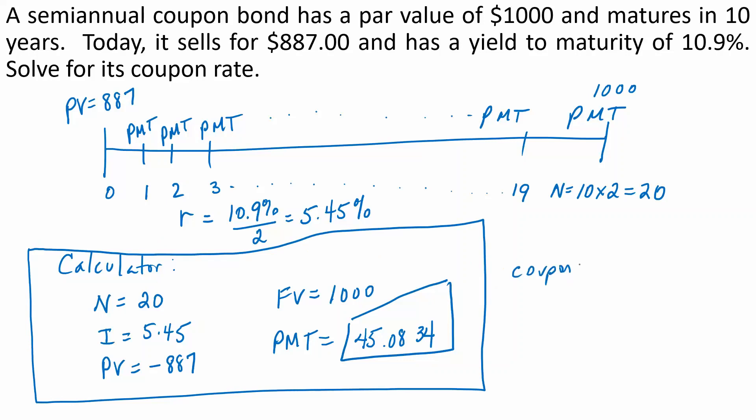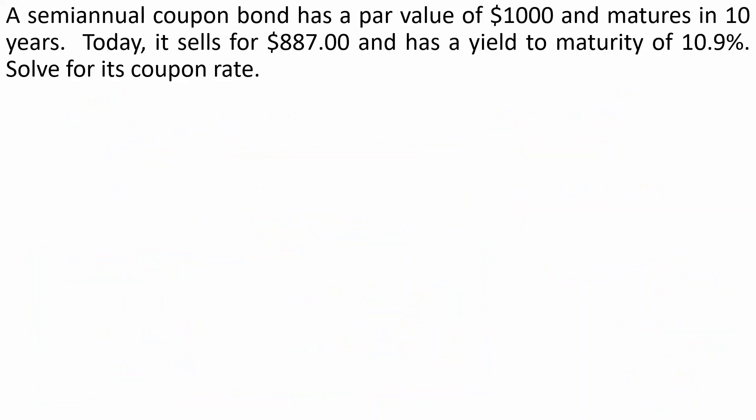So the coupon rate will be the semiannual payment times 2 divided by the par value, which is 0.0902 or 9.02%.